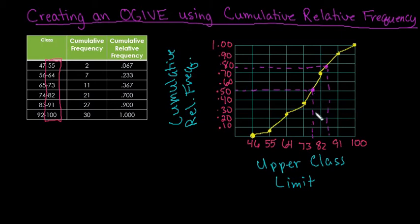The 50th percentile, remember, is where half of your data falls below or above that. But there's a lot of information that you can do. Hopefully this helps you and you can figure out how to create an ogive using the cumulative relative frequency.